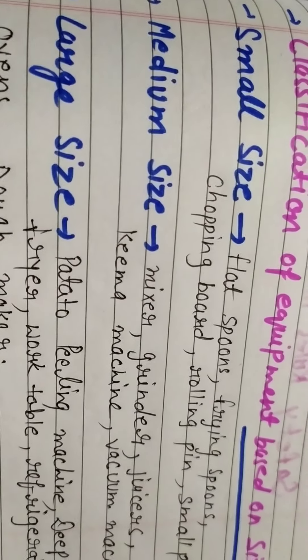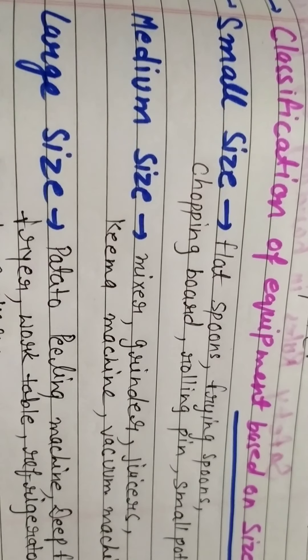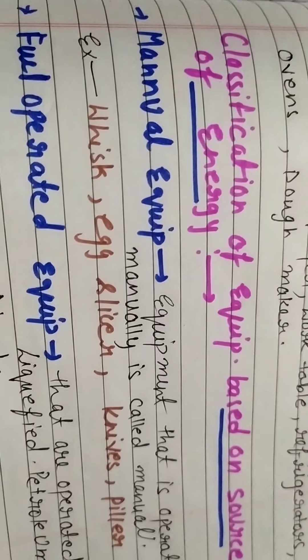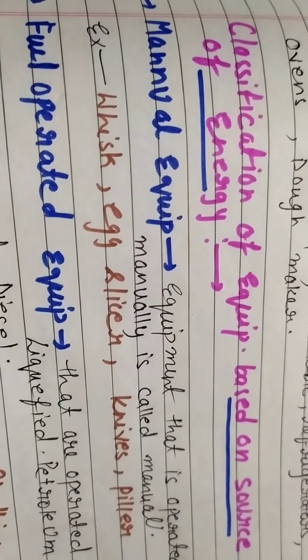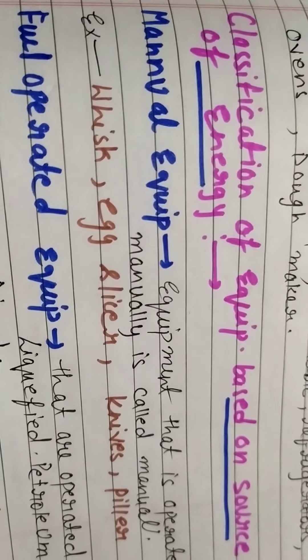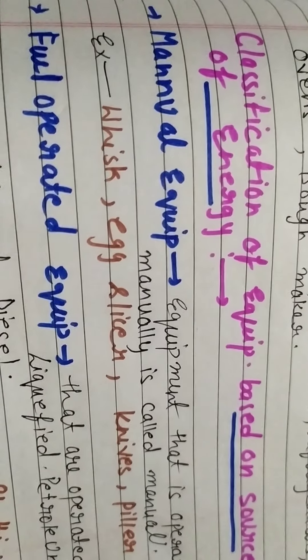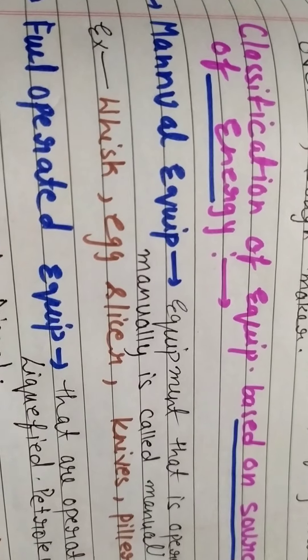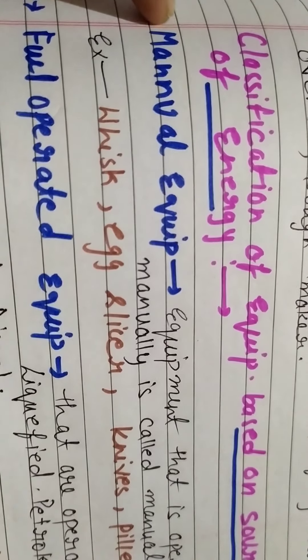So these are equipments based on size. Second classification of equipments is based on source of energy. The examples are the same, but first point is manual equipments. Manual means there is hand work.